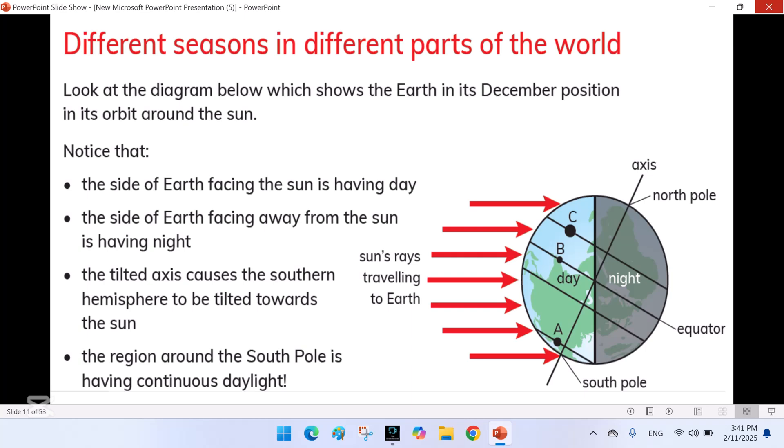Notice that the side of earth facing the sun is having day. The side of earth facing away from the sun is having night. The tilted axis causes the southern hemisphere to be tilted towards the sun. The region around the south pole is having continuous daylight.